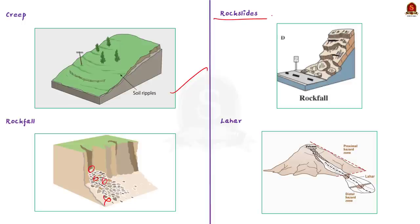Apart from these, there is one more type called lahar — a mud flow or debris flow that originates on the slope of a volcano. It is usually triggered by heavy rain eroding volcanic deposits, sudden melting of snow and ice due to heat from volcanic vents, or the breakout of water from glaciers.